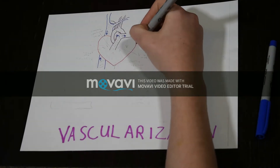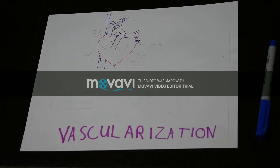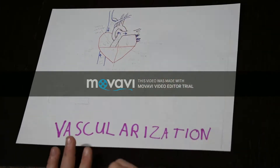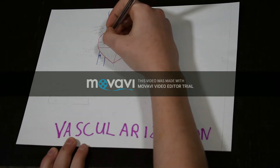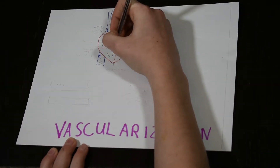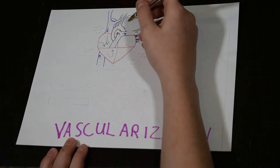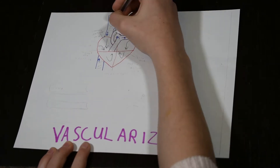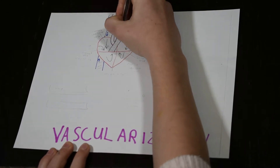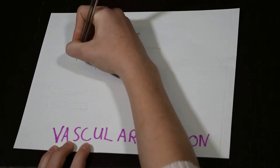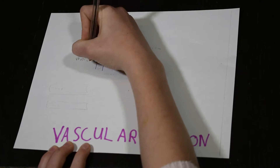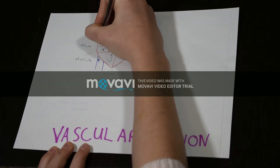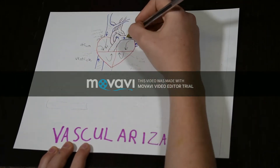Arteries are thicker and carry blood away from the heart — arteries, away. The artery that carries deoxygenated blood is called the pulmonary trunk. Capillaries deliver blood directly to the tissue. They bridge the arteries and veins and form capillary beds, which are basically just immense collections of capillaries that supply blood to the tissue.